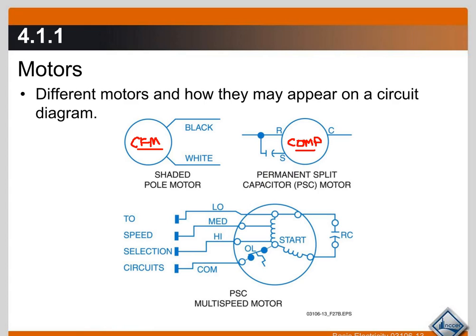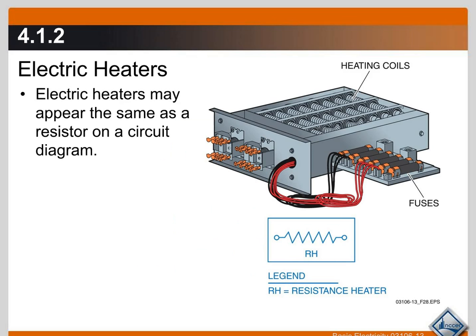Heaters. These are resistance heaters. This example here shows the electric strip heaters that you'd find in a heat pump or an electric furnace. This is a pretty universal symbol for a heater, and that's this zigzag line like this.